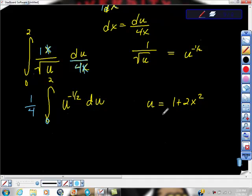So the lower limit was 0, so now it's 1 plus 2 times that 0 squared is equal to 1, so our new lower limit is 1. We're going to do the same thing with this 2 up here. So I'm going to bring this down, 1 plus 2,